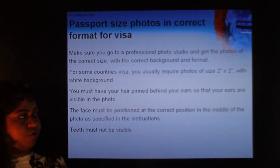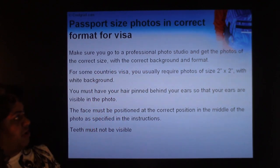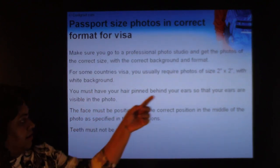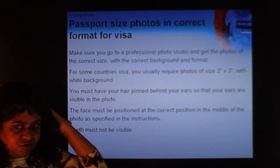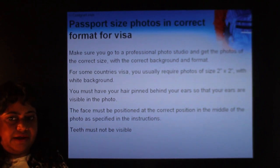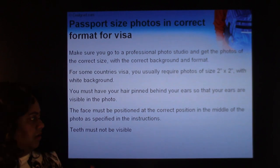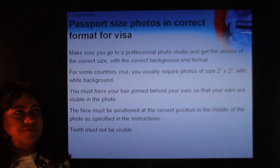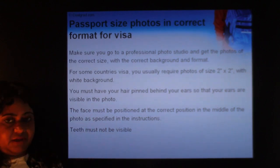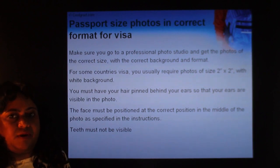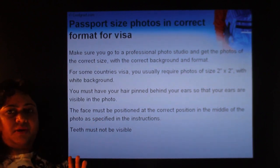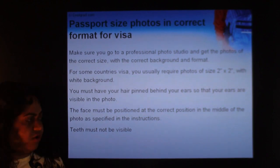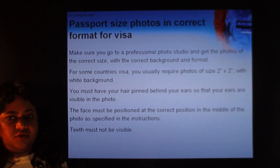For the passport photo format: for the US, it's typically 2 inch by 2 inch with a white background. Your hair must be tied back so your ears and forehead are clearly visible. Do not show your teeth — you can smile but keep your mouth closed. Your face must be upright and centered in the photo, occupying a required minimum ratio of the frame. Different countries have different specifications, so consult a professional photo studio or check the consulate website.